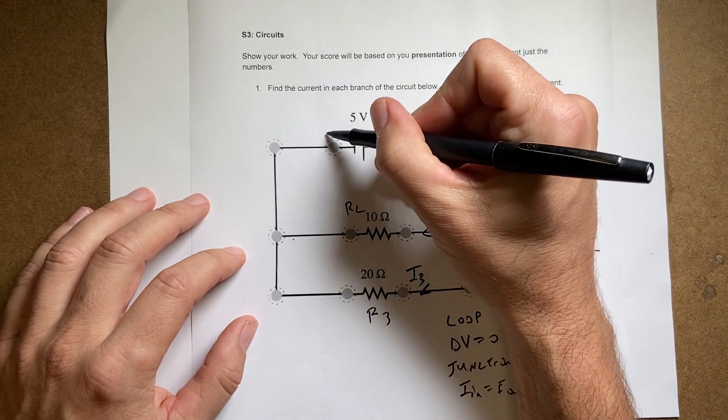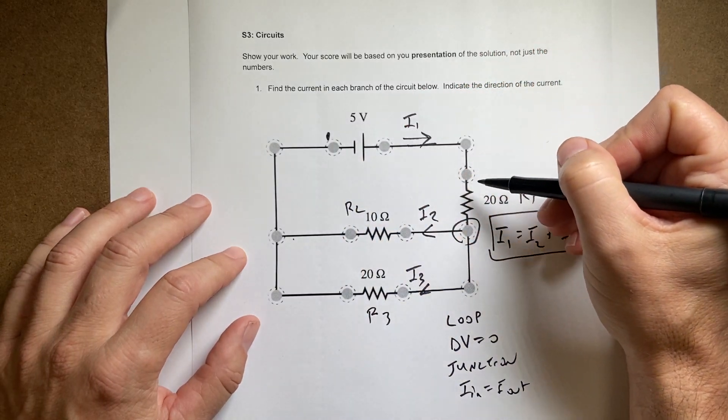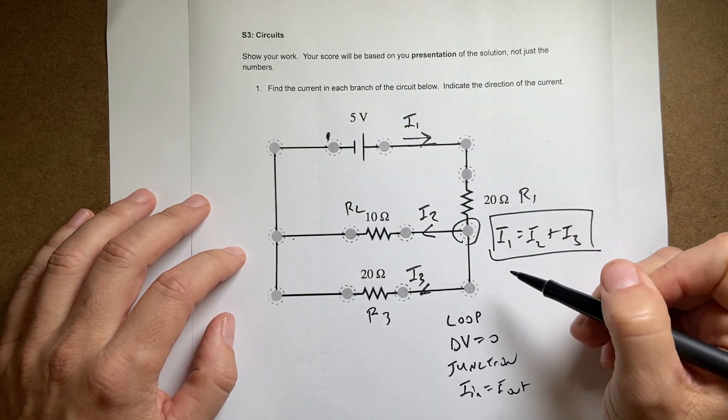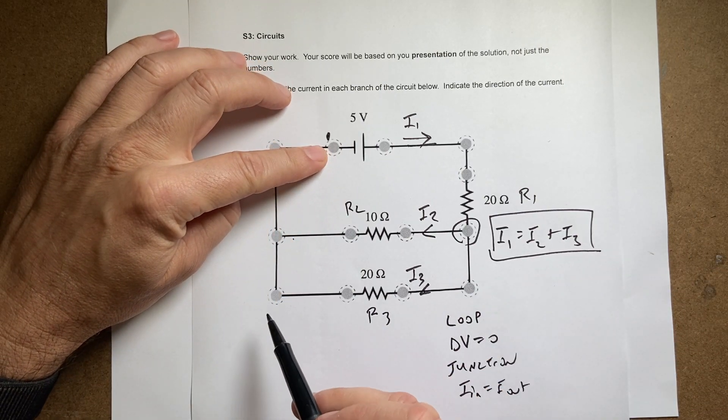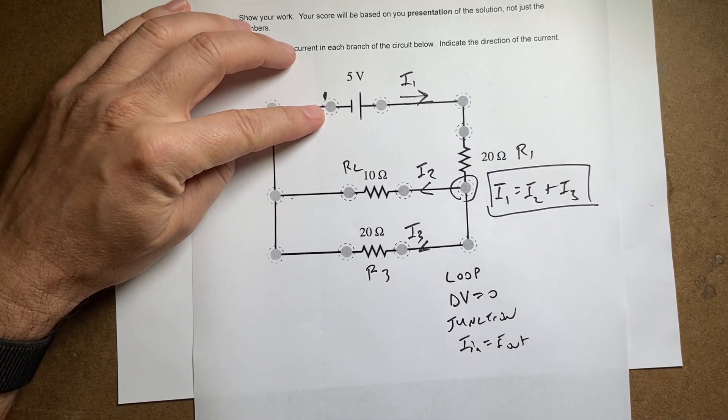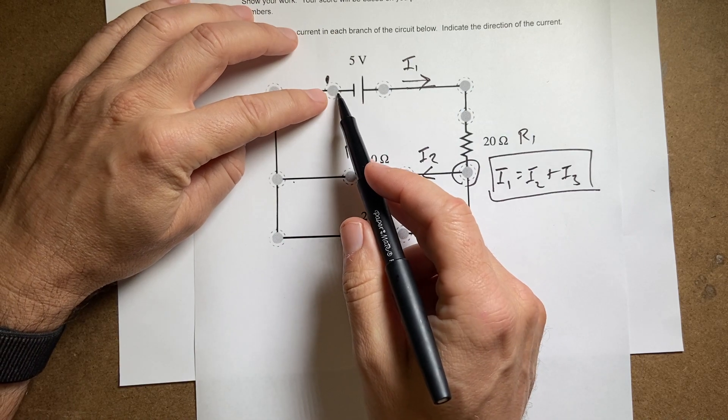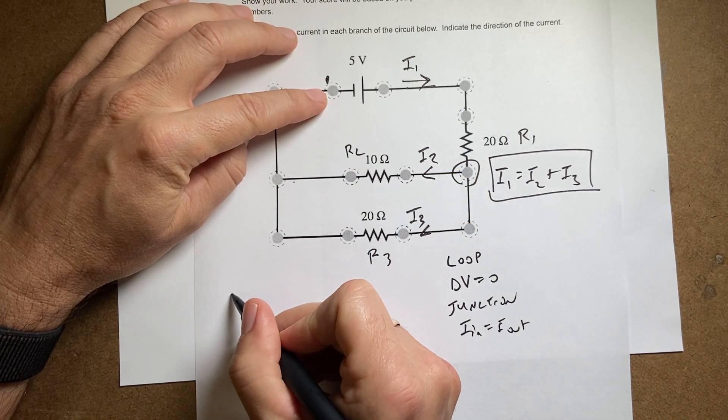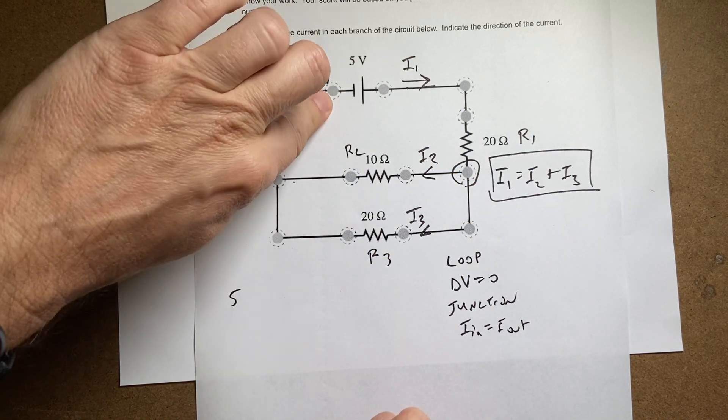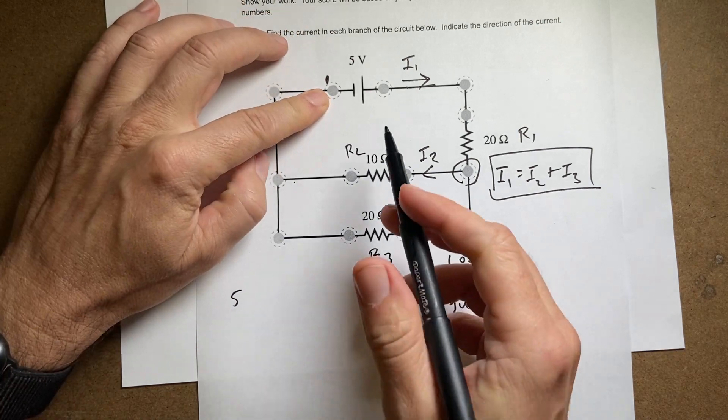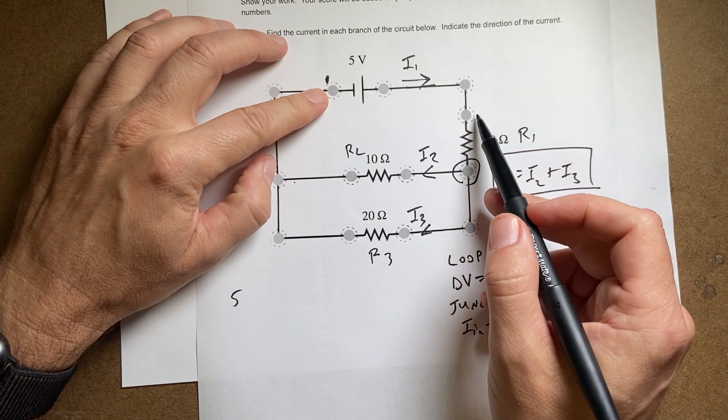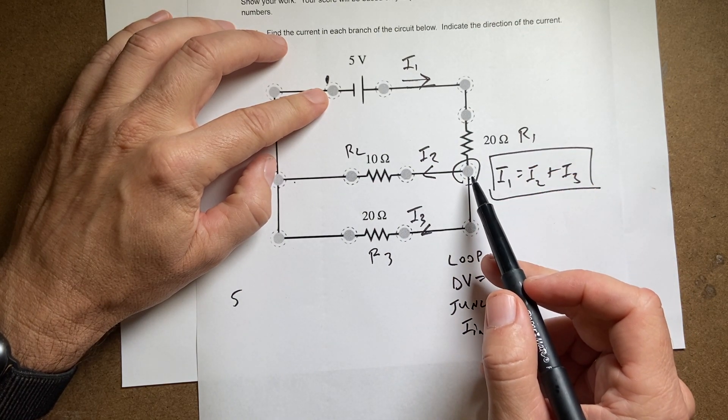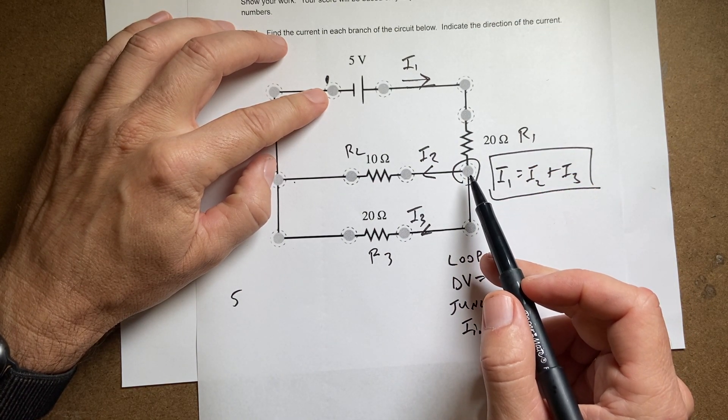I'm gonna start right here and I'm gonna go around the big loop. And so if I do that let's add up the voltages. I'm gonna write that equation down here and then I'll move these to another page to solve it. So right here I go across that I get 5 volts. I'll leave off the units. Next I come down here and I go across this resistor. I'm going in the same direction as electric current. So it's going to be an electric potential drop.